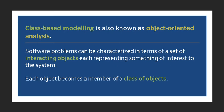Let's use a human being as the object. Human is the object, and the attributes are name, address, age, gender preference, and status. Another example is television as the object, with attributes like color, size, brand, and more.